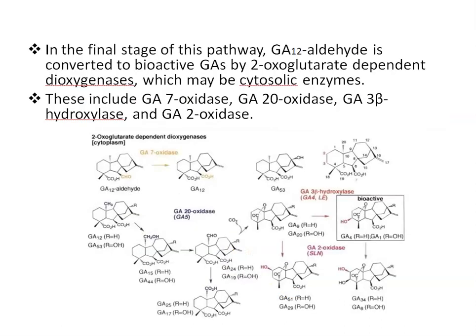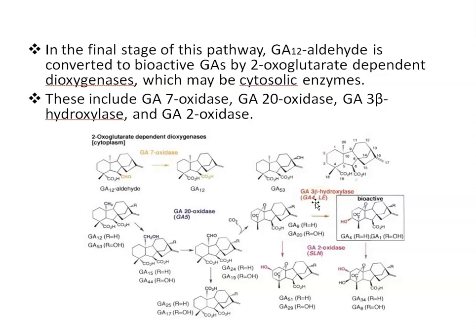In the final stage of this pathway, GA12 aldehyde is converted to bioactive gibberellins by 2-oxoglutarate-dependent dioxygenases, which are cytosolic enzymes. These include GA7 oxidase, GA20 oxidase, GA3 beta-hydroxylase, and GA2 oxidase. With the help of all these enzymes, GA12 aldehyde is converted to different bioactive gibberellins.